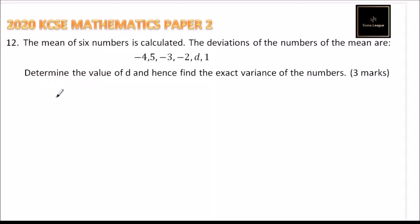This is question number 12, 2020 KCSE Mathematics Paper 2. We are told the mean of six numbers is calculated. The deviations of the numbers from the mean are -4, 5, -3, -2, d, and 1. Determine the value of d and hence find the exact variance of the numbers. You get 3 marks.